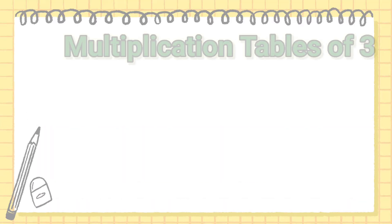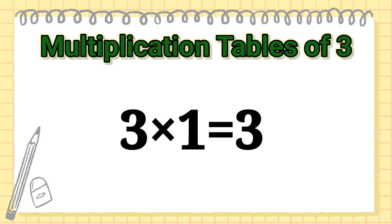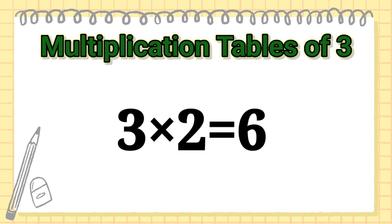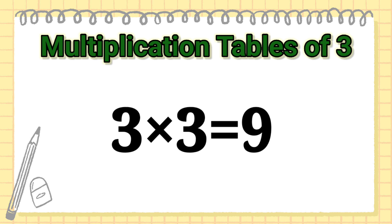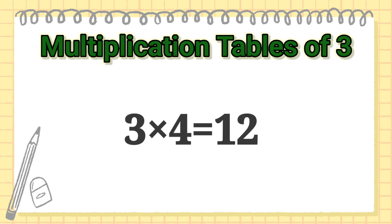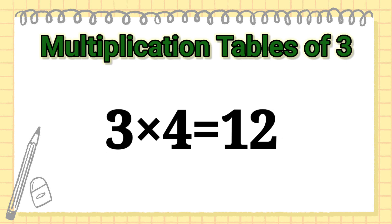Multiplication Table of 3. 3 1's are 3, 3 2's are 6, 3 3's are 9, 3 4's are 12.